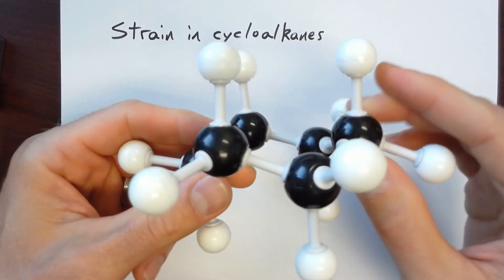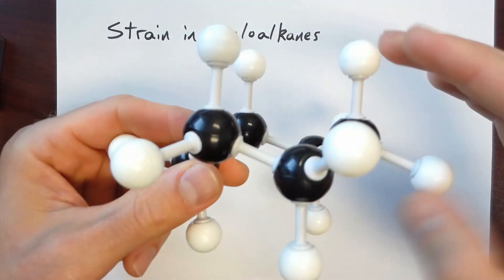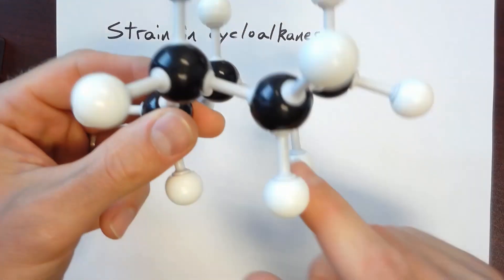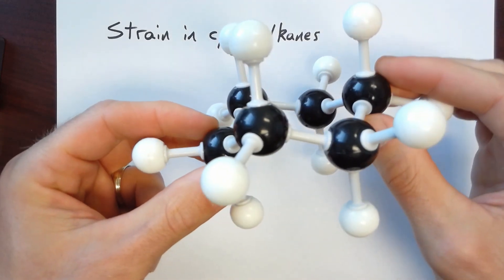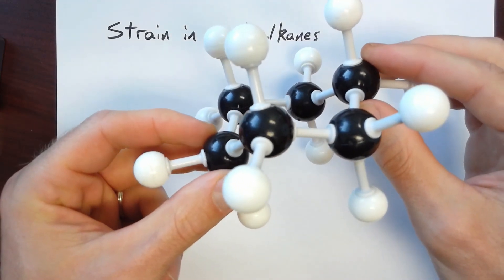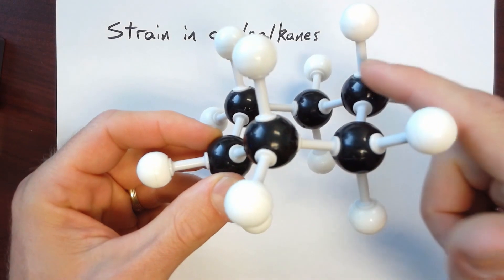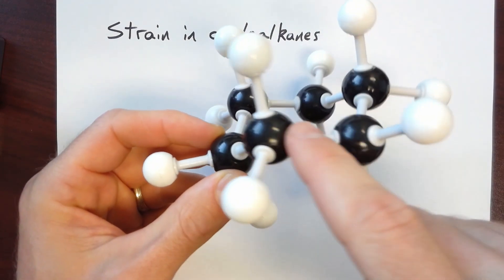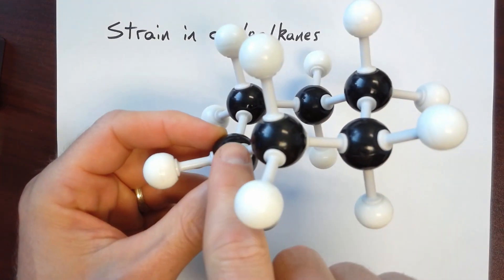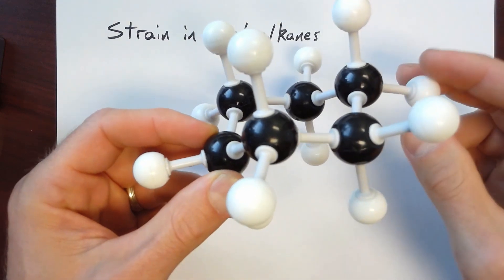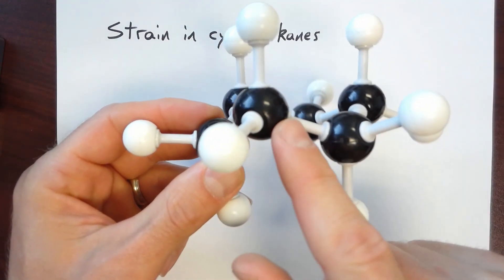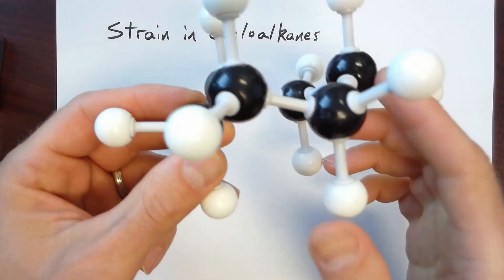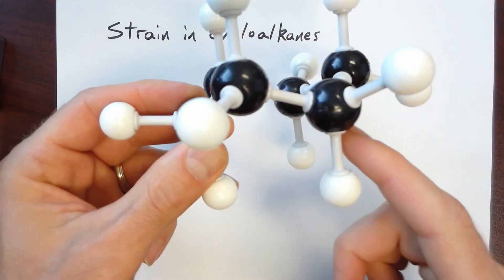Notice that there are some of the hydrogens pointing sort of up and some pointing down. And this exhibits a chair. If you look at the carbons, you'll see this is the back of the chair. And then we have the seat of the chair. And then this is where your legs would hang off. So this is called the chair conformation. Three of the carbon atoms are up-carbons, and then three of the carbon atoms are what we might call down-carbons.